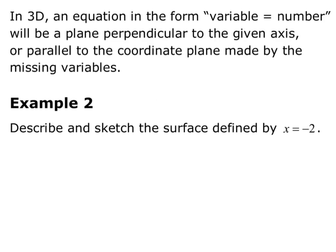In 3D, an equation in the form 'variable equals a number' will be a plane perpendicular to the given axis, or you can think of it as a plane parallel to the coordinate plane made by the missing variables.